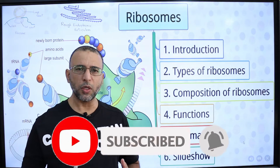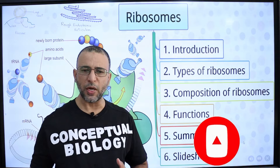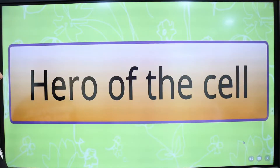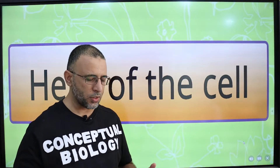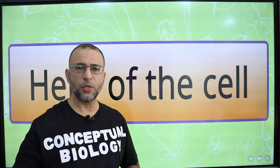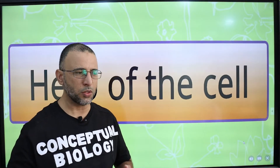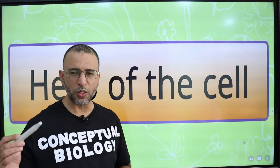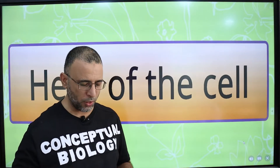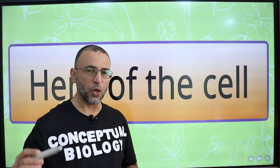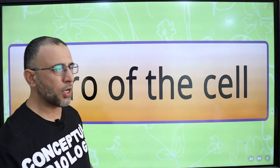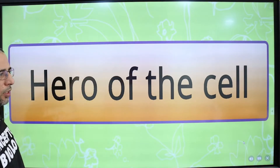Ribosomes are called the protein factories of the cell. They translate the genetic information into a polypeptide chain. Ribosomes are called the hero of the cell because they are involved in protein synthesis. Protein is the structural component in the cell membrane, nuclear membrane, chromosomes, and all the membranous organelles present in a cell. That is why ribosomes are one of the most important organelles of the cell.